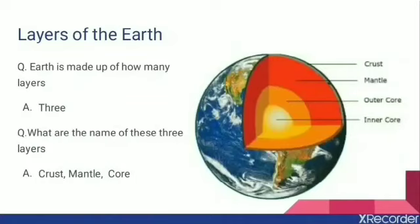Now let's look at the structure of the Earth — specifically the layers of the Earth. Have you ever seen a watermelon when your mother cuts it? The outer surface is green and hard, then inside there is a white layer, and below that is the red pulpy part. It is made up of many layers. In the same way, our Earth is also made up of many layers. There are three layers in our Earth. The three layers are crust, mantle, and core.